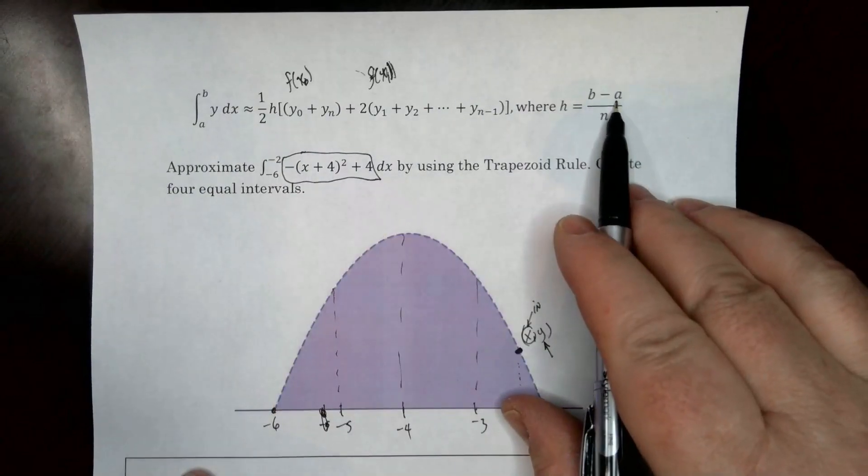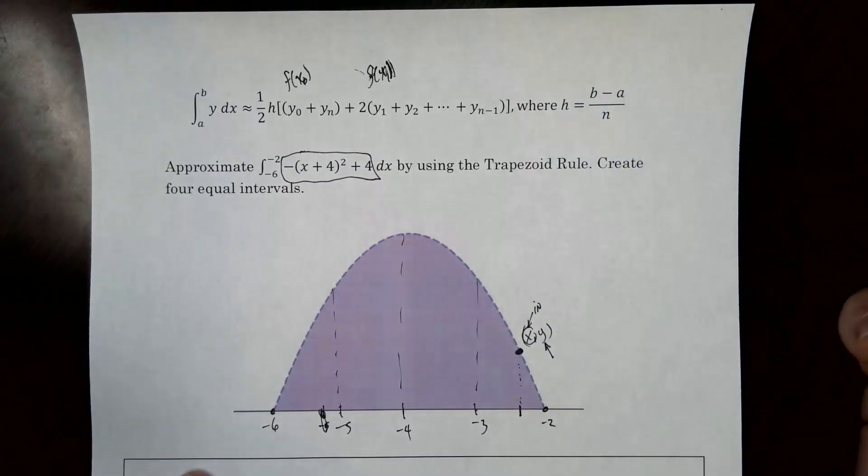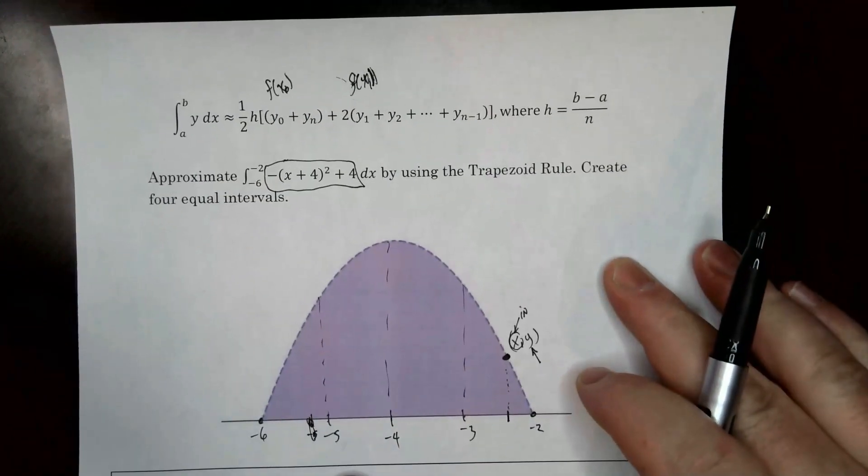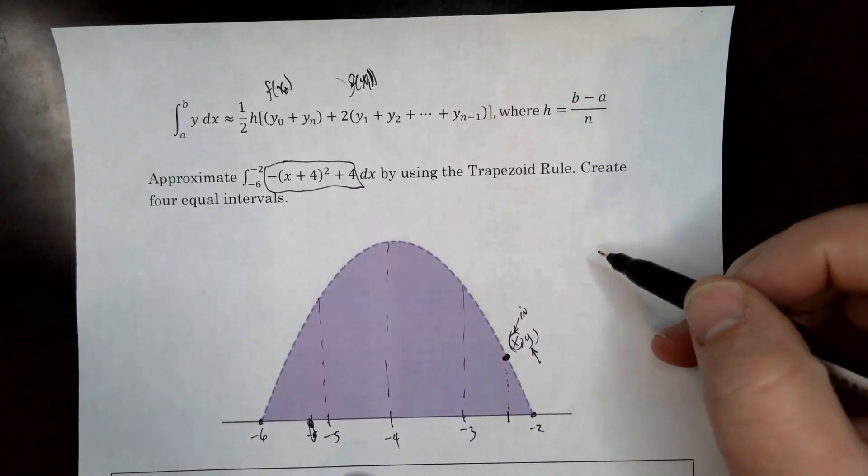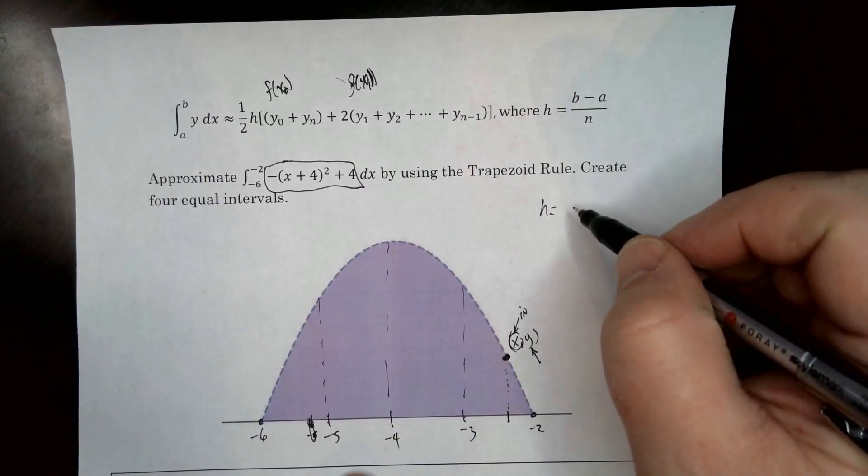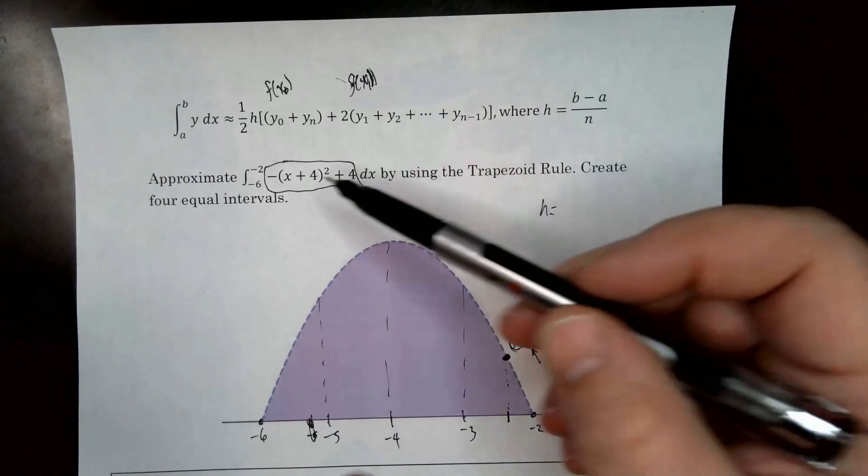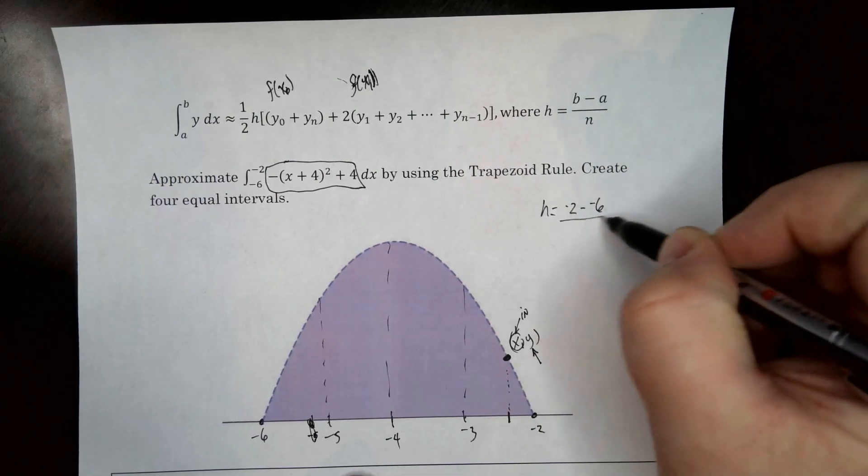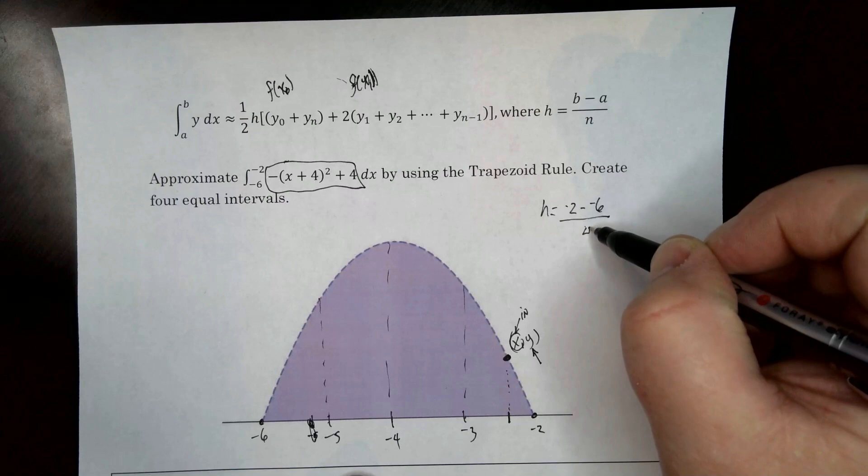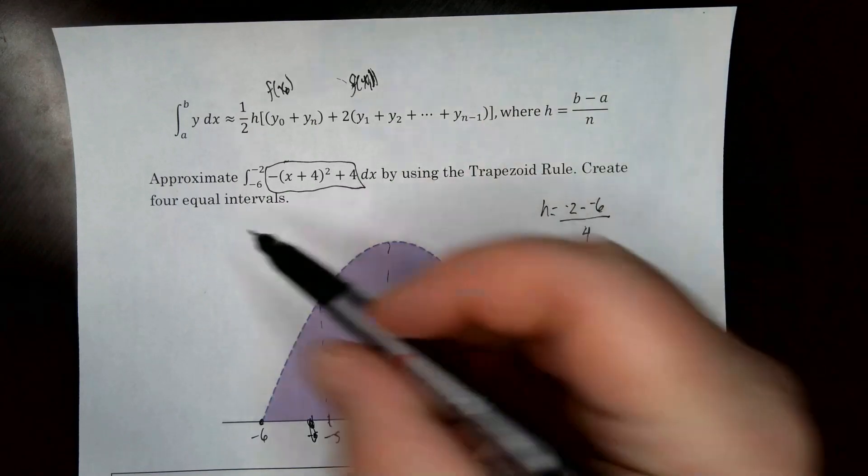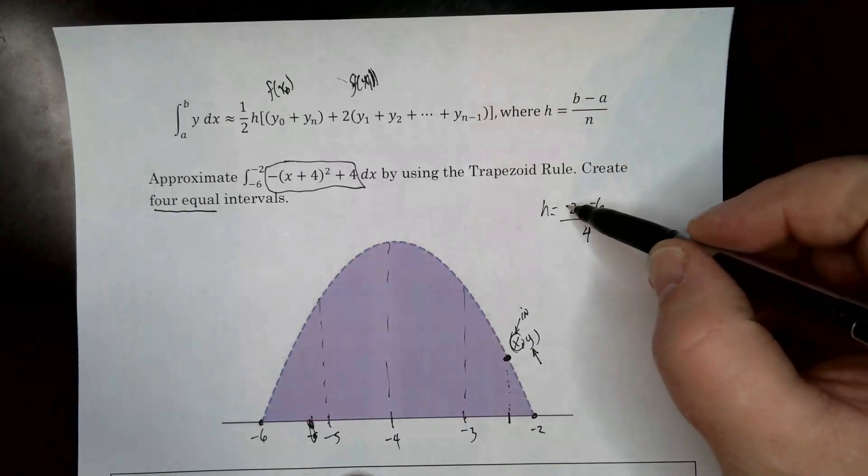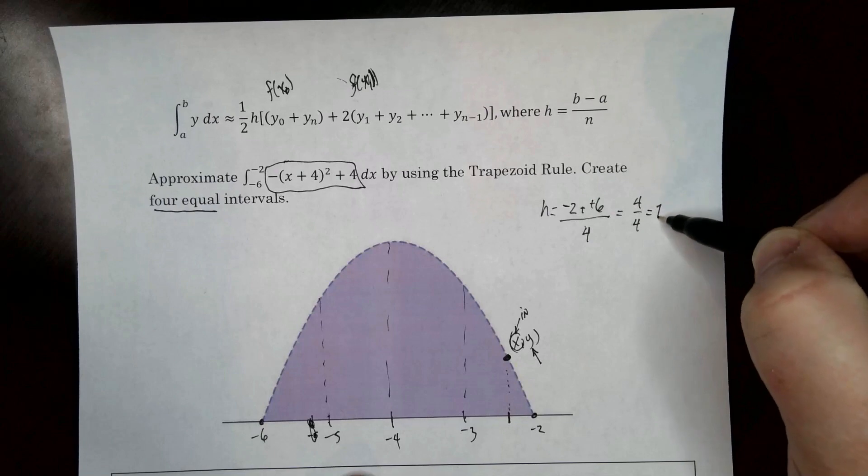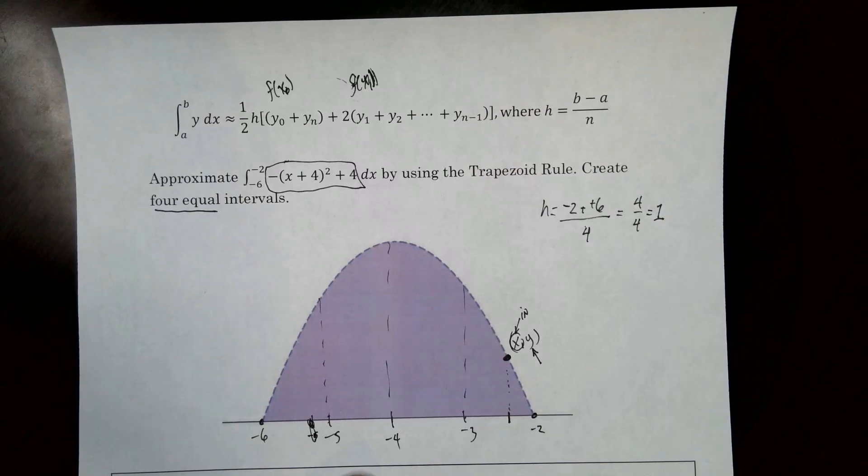Now h is b minus a divided by n. So let's go ahead and set all that up right here. I'm going to go ahead on the paper. I've got some room to do some work, but because we're using the document camera, you can't see the whole thing. I'm going to do the work over here. So h is b minus a. So b minus a is going to be negative 2 minus negative 6 over n. n is 4. So negative 2 minus negative 6 is 4 over 4, which is good old-fashioned number 1. So h is 1, so that's kind of easy.